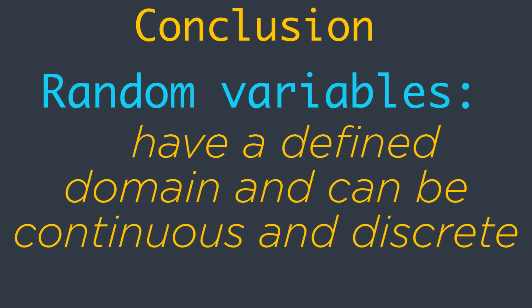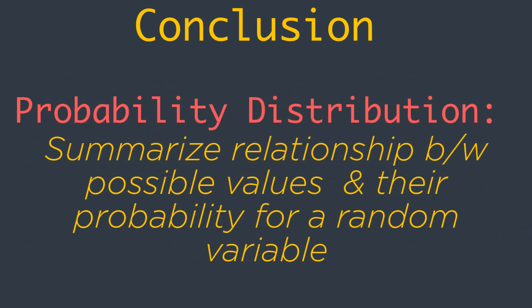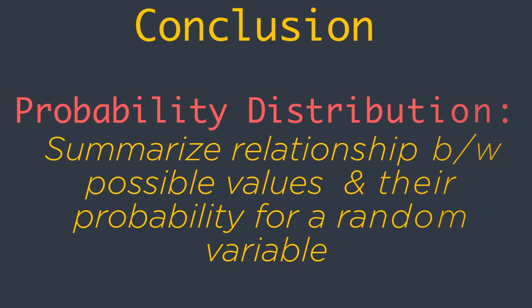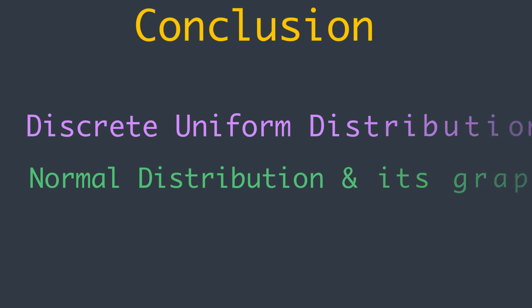I think that's enough for this video. We learned a lot. We talked about random variables in probability—they have a defined domain and can be continuous or discrete. Probability distributions summarize the relationship between possible values and the probability for a random variable. How discrete uniform distribution can help to grasp probabilities. And finally, we talked about the normal distribution along with its graphical representation and how the change in mean and standard deviation really affects. Thanks for watching!